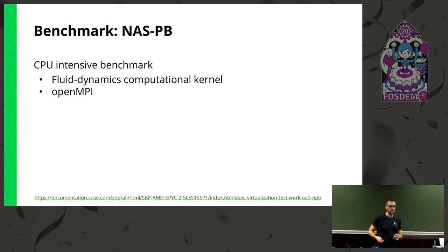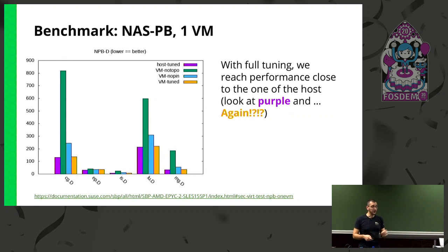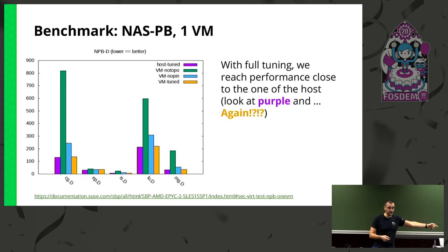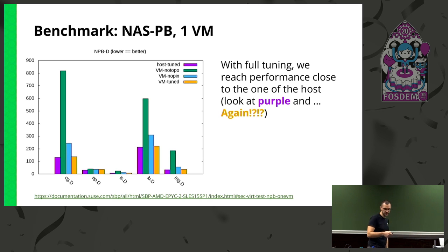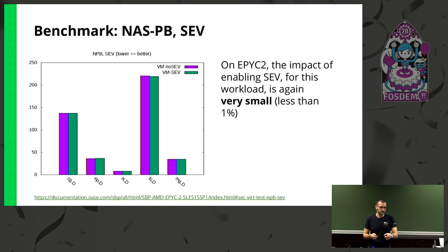Another benchmark: NAS Parallel Benchmarks, or NAS PB. This is a very CPU-intensive benchmark — the CPU and memory focus I mentioned. It uses OpenMPI for parallelization, not OpenMP. Lower is better this time. The structure is the same: first bar is bare metal, last bar is VM with tuning, and we want them to be very similar — which is indeed the case with tuning applied across all variants of the NAS PB benchmark. Again, with encrypted virtualization enabled or disabled, the CPU-intensive benchmark showed less than one percent performance impact, which is very good.